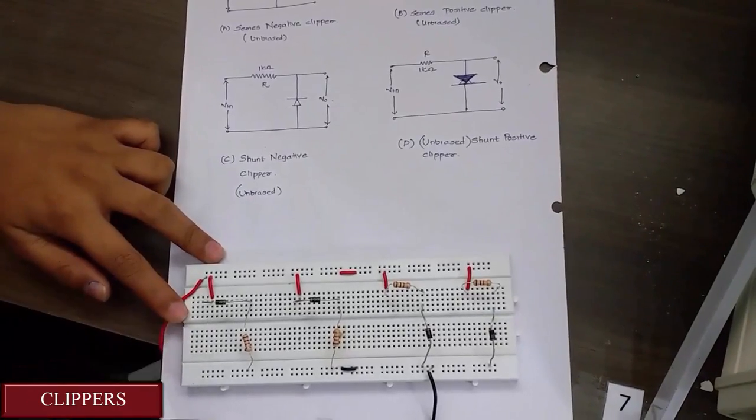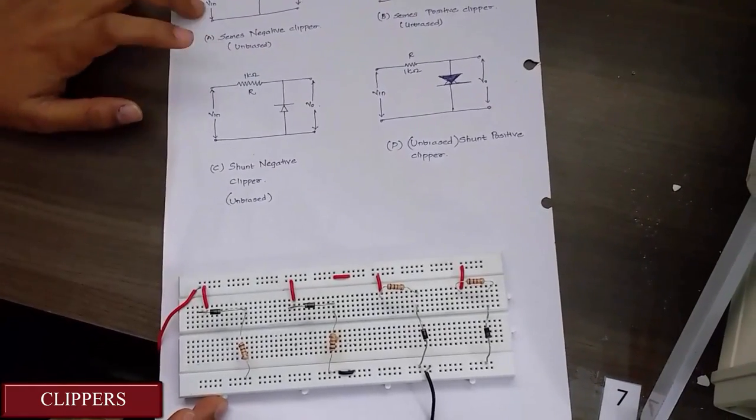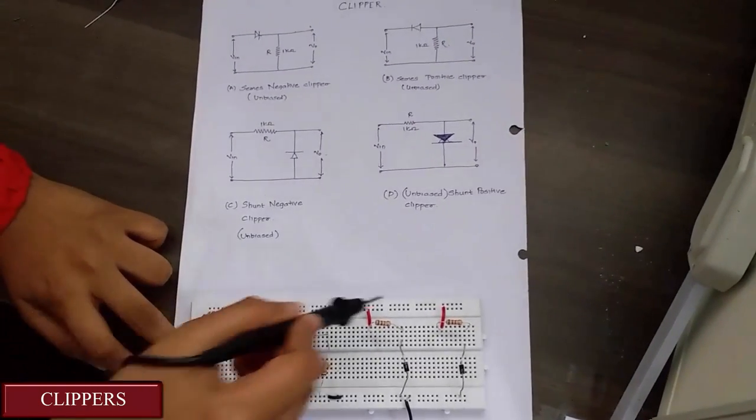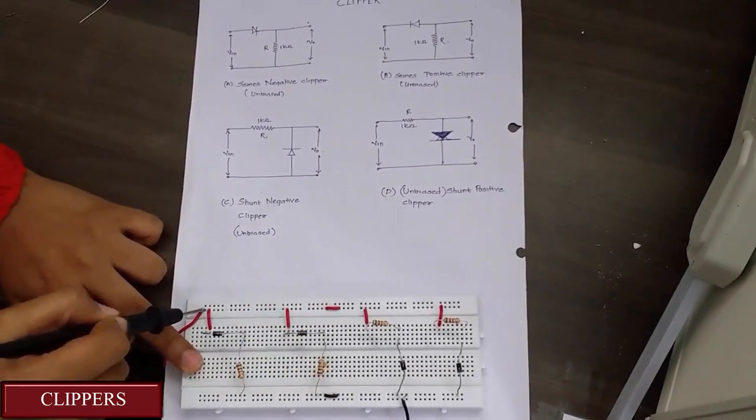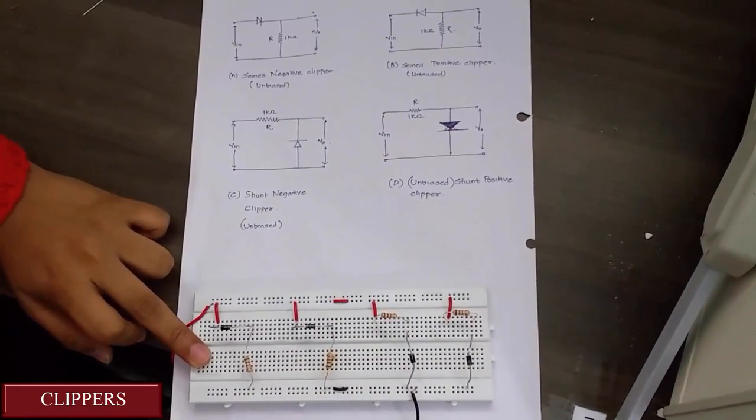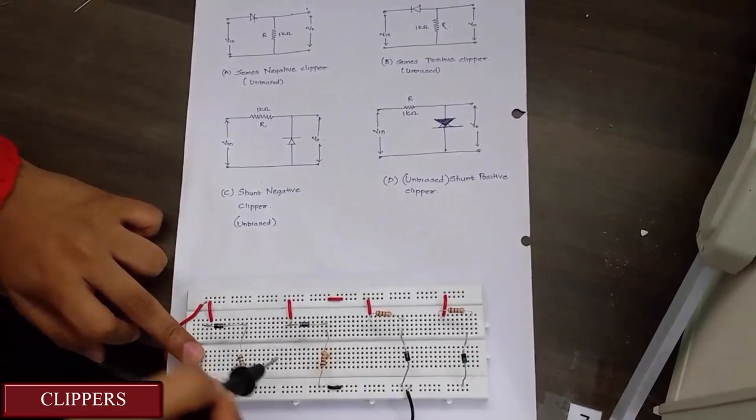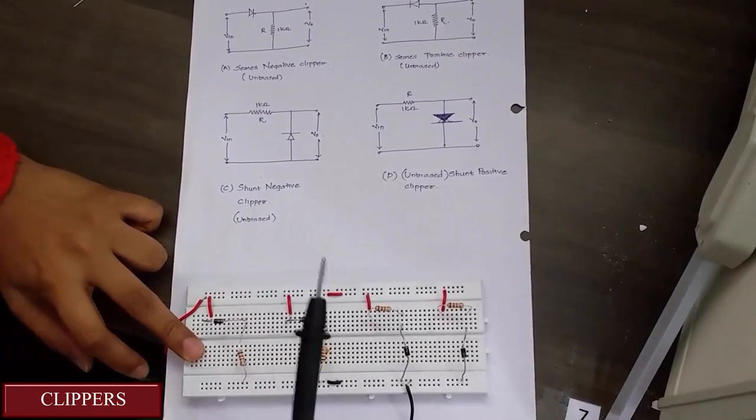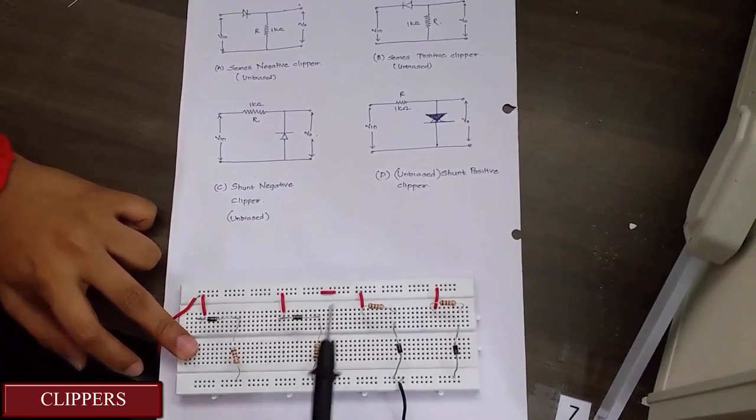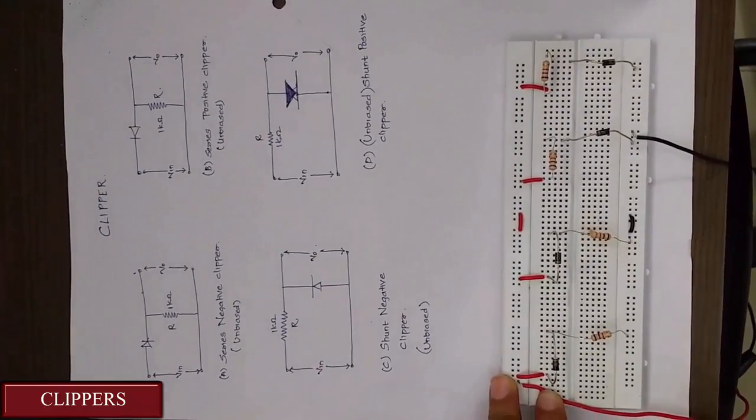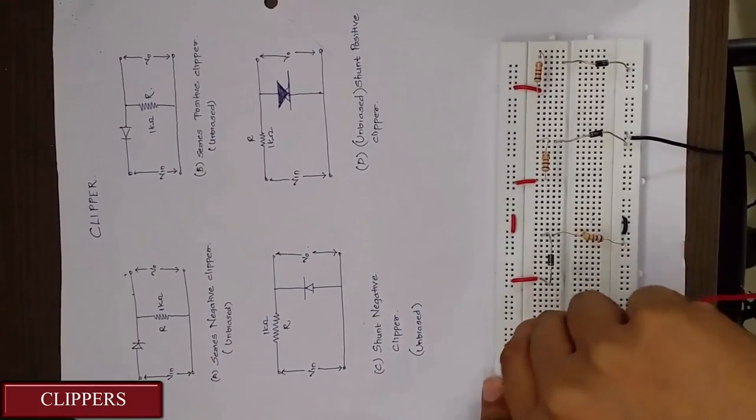This is the connection according to the series unbiased negative clipper. Here the input is given through this line. This line represents the input for each type of clipper. And this line here represents the ground terminal. Similarly according to the circuit diagram we have connected the circuit. Now let's see the output of the series negative clipper. We are going to give the output here.